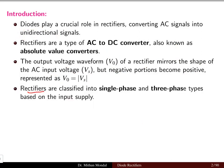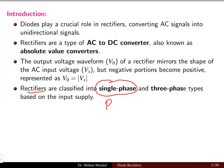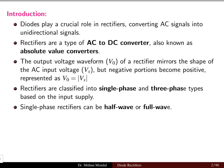Rectifiers are classified as single phase or three phase rectifiers depending upon how many signals you are using. In three phase we have R, Y, B phase sequence. If we are using all three phases R, Y, B then we have three phase rectifiers. If we have only one phase with respect to neutral, then that is a single phase rectifier, depending upon the input supply.